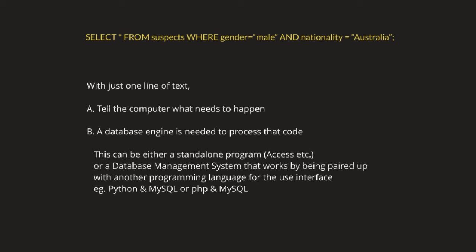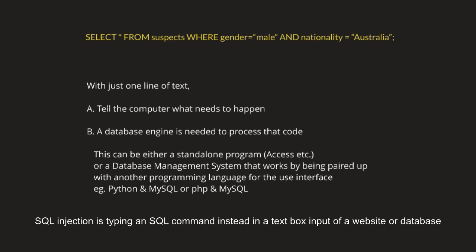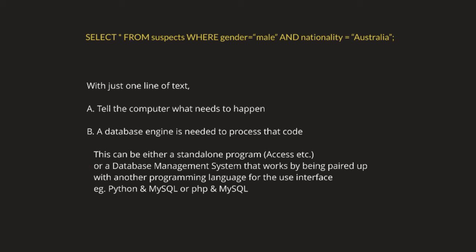Notice how with just one line of text we are telling the computer what needs to happen. This is not one of those programming languages where you are instructing every single step — you are just describing to the computer what needs to happen, and then the database management system (DBMS) will make it happen and return the result, which in this case will be all the males from Australia inside the table 'suspect'.